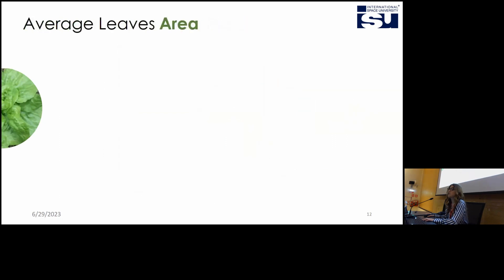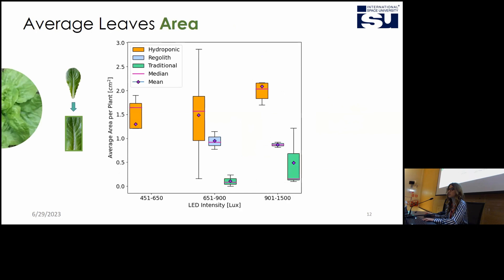Same discussion for the average leaf area. The area of the plants, the leaves were approximated to rectangles for measurement and comparison. And here we can clearly see that the hydroponic system has way better performance than the regolith one.